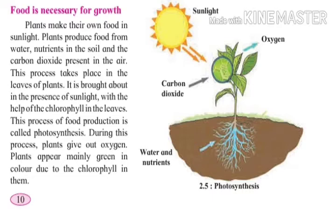This process takes place in the leaves of the plant. Ani anna nirmiti chi prakriya vanaspati ncha paana madhe hota asti. It is brought about in the presence of sunlight with the help of the chlorophyll in the leaves. This process of food production is called photosynthesis. Vanaspati cha anna nirmiti chi prakriya madhhe, surya prakasha madhe hoch daste, ani ya prakriyala photosynthesis arthat prakaash sanshleshan asam matla jaate.